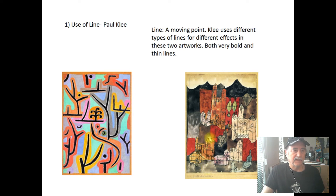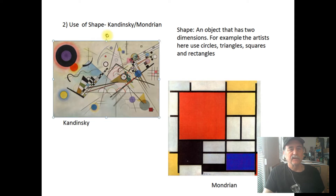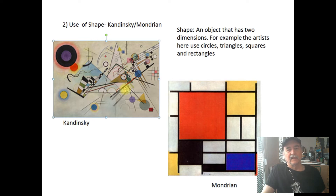Here's another use of shape. This is another work by Kandinsky, where he uses circles, triangles, squares, and some elongated rectangles. He was very into music as well, and many people who look at his artworks have been able to see the connection between his artwork and music composition.